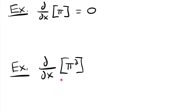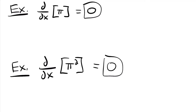Now let's look at the derivative of pi squared. This one sometimes tricks people because they see that squared and automatically think they need to use the power rule. But you don't use the power rule here because this isn't a variable — it's a constant. Pi squared is just some number, like 9.8-something. It's not a variable of any kind. So while it might be tempting to write 2pi, don't do that. The derivative is just zero. Whether it's pi or pi squared, it's still a constant, so the derivative is still zero.